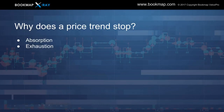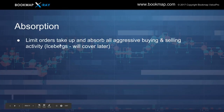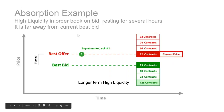Let's get into why price trend stops. I'm going to go through absorption and exhaustion. Absorption is the limit orders that take up and absorb all the aggressive buying or selling. It could also be iceberg orders, but we'll cover that in the advanced session. Let's go through an example. We start with our market buy of volume one as current price, but there's a distinction: we have longer-term high liquidity down here in the depth on the bid — 125 contracts, very high compared to all the rest of the book.